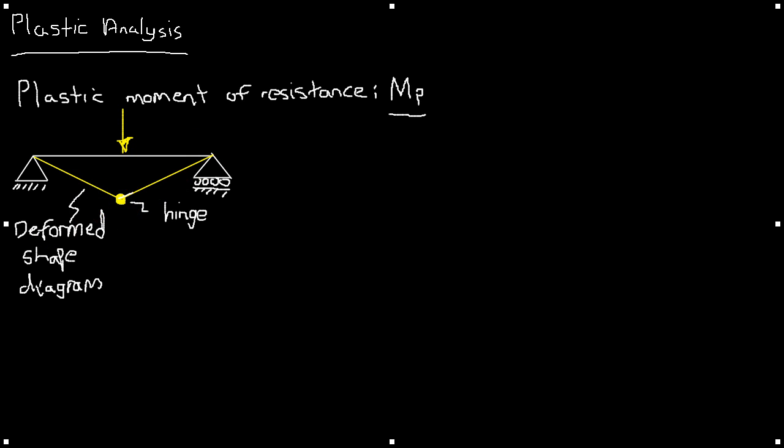Now why does the plastic hinge form in the middle? Well if we draw the bending moment diagram we can see the plastic hinge forms where the bending moment is greatest or a peak in the bending moment diagram occurs.